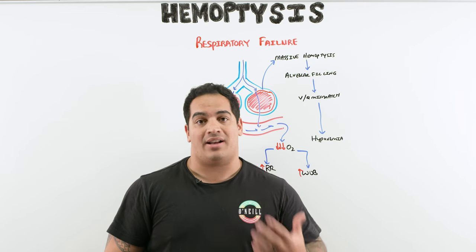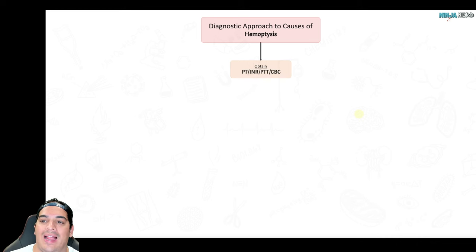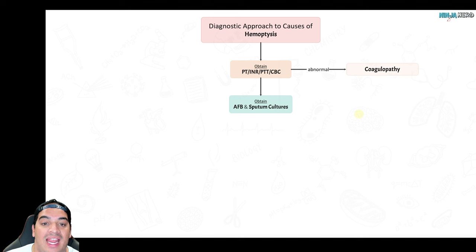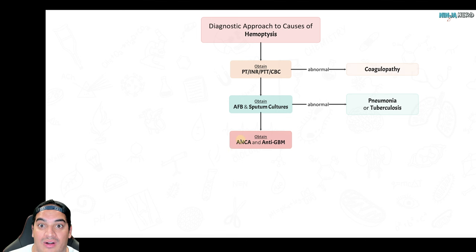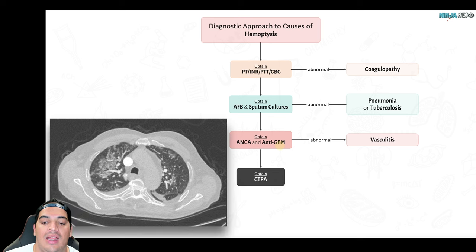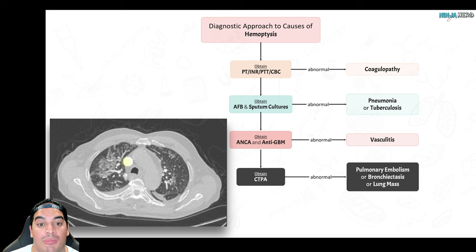Now let's talk about how to diagnose hemoptysis. First, rule out a simple coagulopathy — are they on anticoagulants? Next, obtain acid-fast bacillus cultures to test for tuberculosis, and sputum cultures for necrotizing infections. Then obtain ANCA and anti-GBM antibodies — c-ANCA suggests GPA, p-ANCA with anti-GBM suggests Goodpasture's syndrome. Lastly, consider a CT pulmonary angiogram to evaluate the bronchial tree, pulmonary vessels, look for pulmonary embolism, bronchiectasis, or a lung mass.